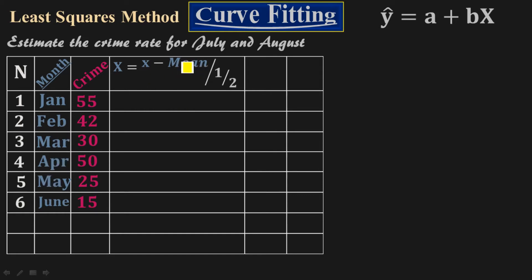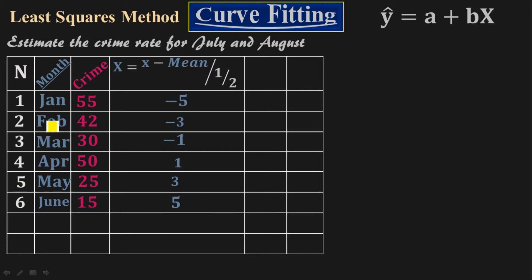Subtract 3.5 from each x value and divide by 1.5 to get Capital X. January: (1 − 3.5) / 1.5 = −5. February: (2 − 3.5) / 1.5 = −3. March: (3 − 3.5) / 1.5 = −1. April: (4 − 3.5) / 1.5 = 1. May: (5 − 3.5) / 1.5 = 3. June: (6 − 3.5) / 1.5 = 5.